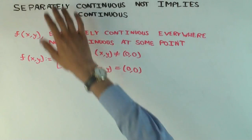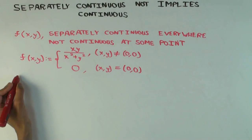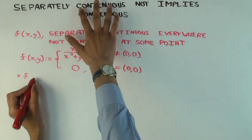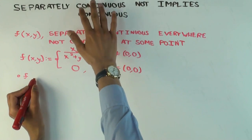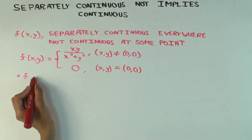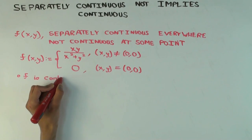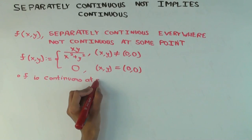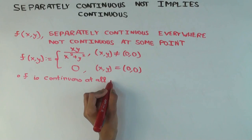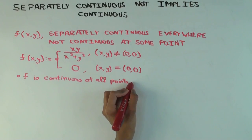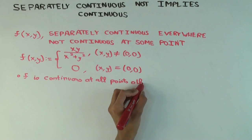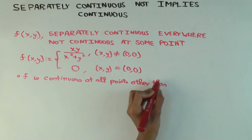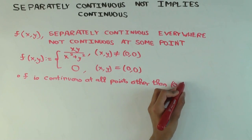The first claim is that f, as I've written down, is continuous and also separately continuous — where anything that's continuous is automatically separately continuous. If you're continuous at a point, it's separately continuous at a point. So f is continuous and hence also separately continuous at all points other than the origin, because it's a rational function. The way rational functions work is they're continuous whenever the denominator doesn't blow up.